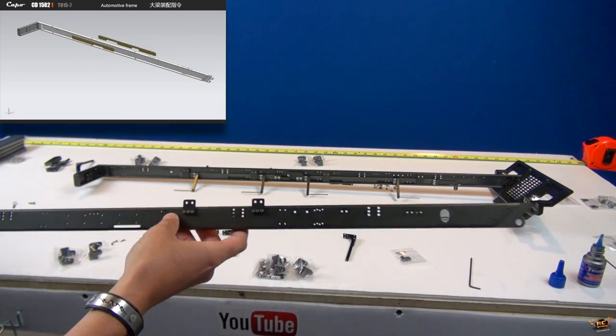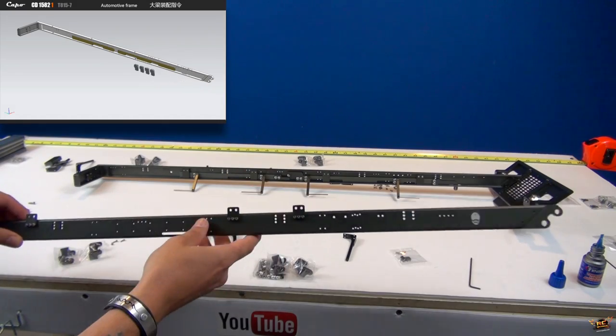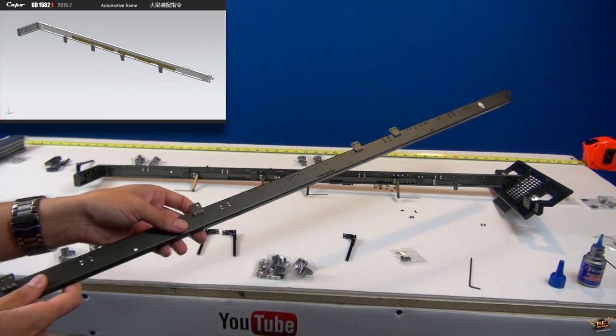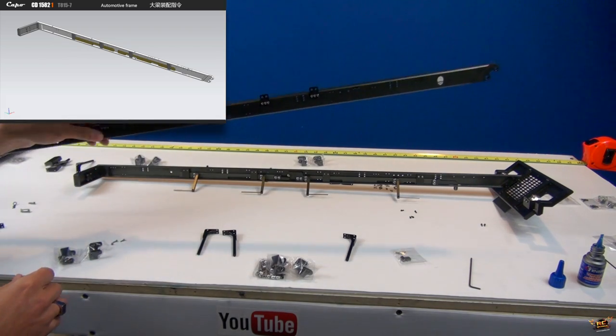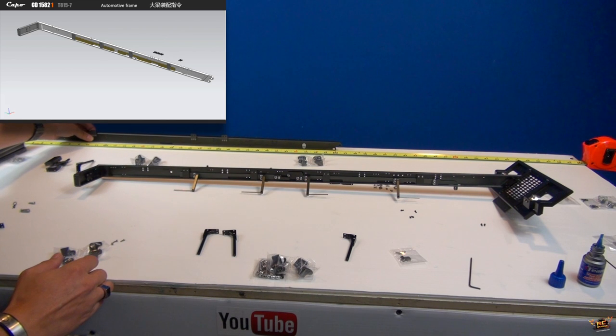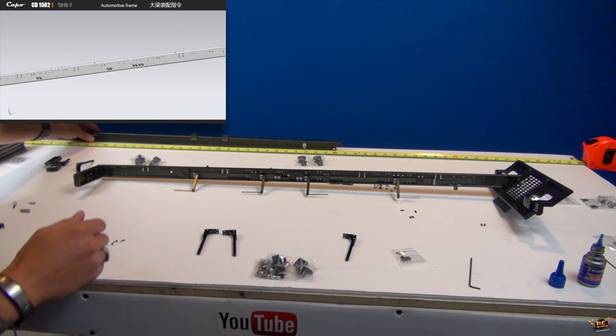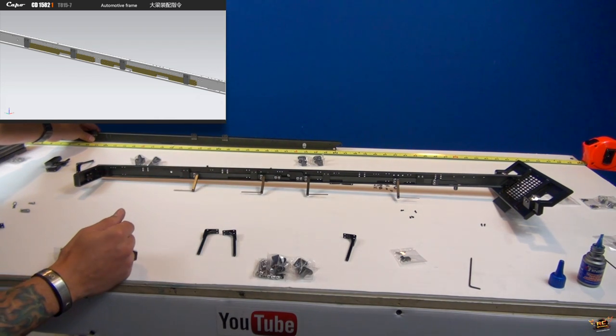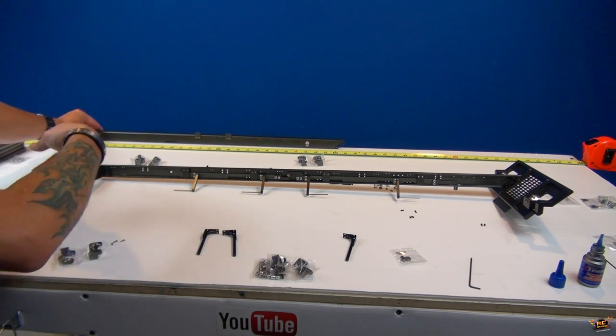All the holes for all the screws. Even these ones have three screws to mount up these hangers. Now this isn't even a start because we have that back piece. Now yes, this is the frame rail for the Capo 15 821.